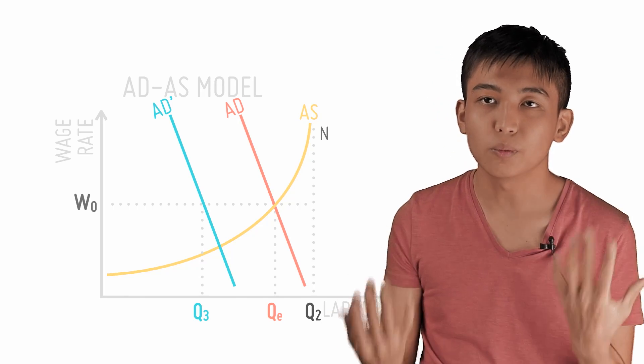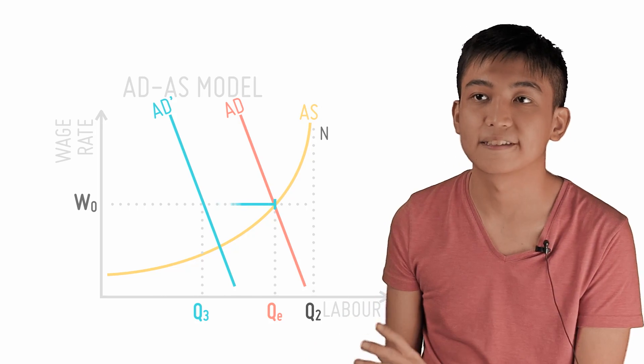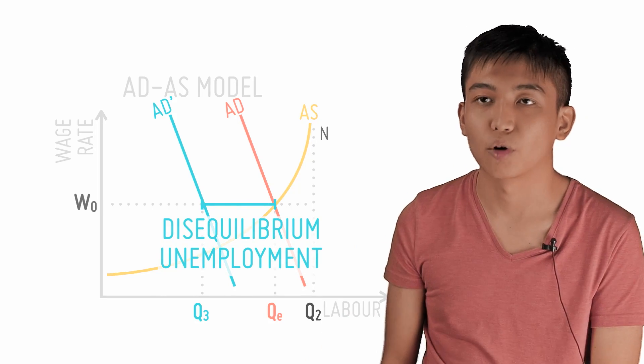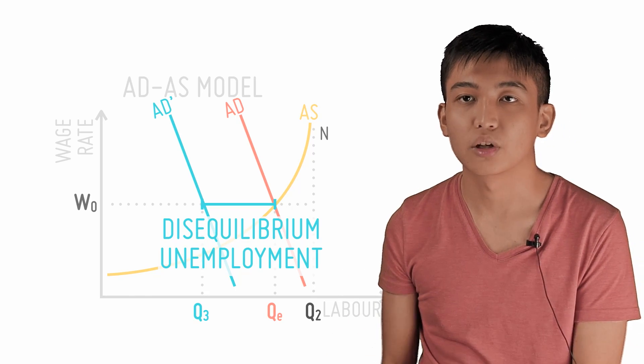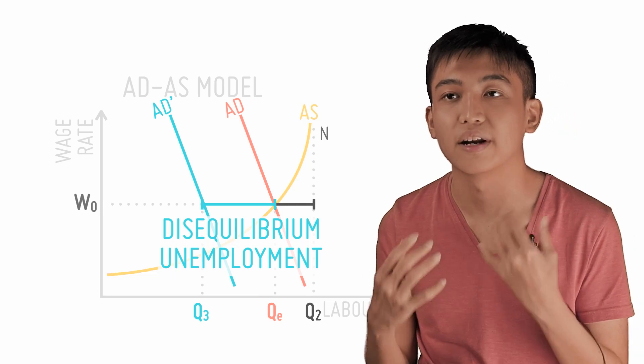However, if we assume the Keynesian assumption that wages are sticky downwards, then there will be disequilibrium unemployment of QE minus Q3. This level of disequilibrium unemployment quite clearly adds to the already natural level of unemployment.